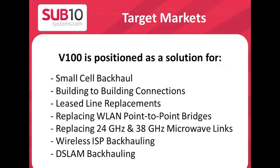Looking at target markets, V100 is positioned as a solution for small-cell backhaul, which is a really important emerging market for LTE small-cell rollouts. V100 is also good for building-to-building connections — for example, for banks and businesses to connect offices together. It's useful for lease line replacements, replacing wireless LAN point-to-point bridges with much lower interference, and replacing 24 GHz and 38 GHz microwave links on shorter hops. It's also useful for wireless ISP backhauling and DSLAM backhauling.